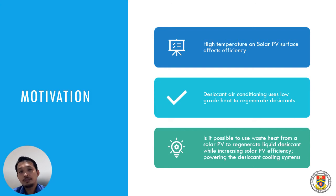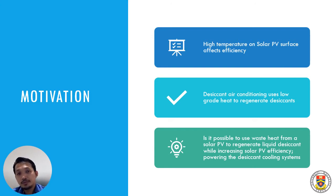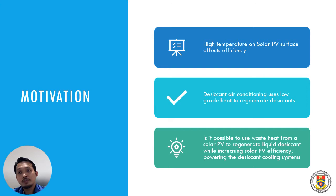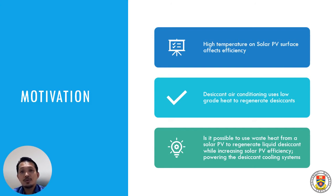We know that solar PV efficiency is affected by temperature, and high temperature on the solar PV surface will affect the efficiency significantly. In Malaysia, for example, the surface of the solar PV can reach up to 70 degrees C, whereas ideally the surface temperature should be about 25 to 30 degrees C, which is not ideal in our hot climate. For desiccant air conditioning, they use low-grade heat to regenerate desiccant. The idea already exists where they use a solar collector to collect heat and regenerate the desiccant. But so far, to our knowledge, there is no use of solar PV waste heat to regenerate the liquid desiccant.